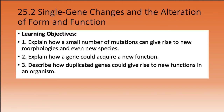Moving on to section 25.2: single gene changes and the alteration of form and function. We'll look at how a small number of mutations can give rise to new morphologies and even new species, how a gene could acquire a new function, and how gene duplication can give rise to new functions in an organism. Basically, one or two gene mutations can lead to an entirely new form.